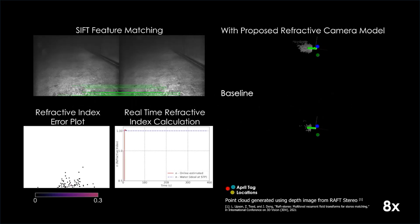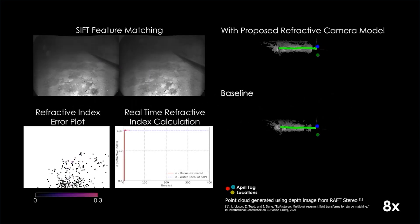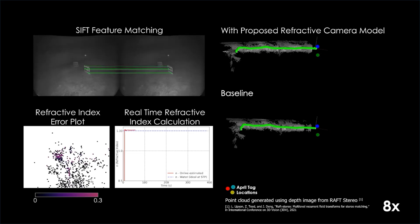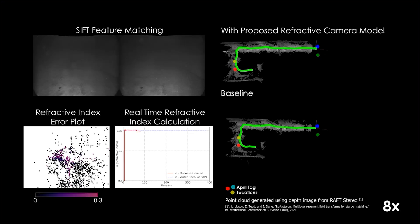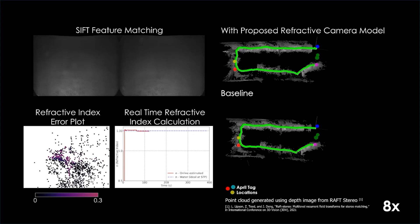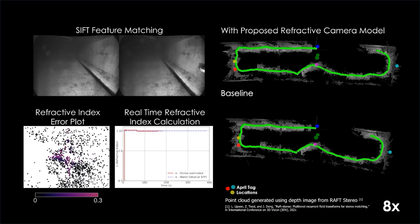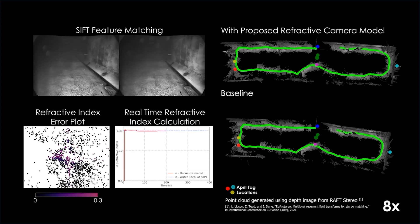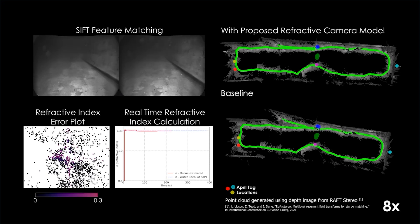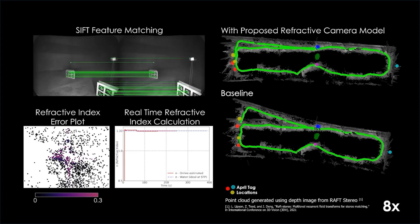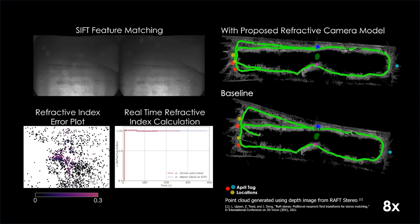We showcase one representative trajectory out of the 24 used for evaluation. The estimation is compared with the ideal value of refractive index 1.33 for water at STP. The method also provides enhanced odometry results. To obtain partial ground truth, we use AprilTags and the collective average distance of each tag upon redetection in subsequent loops is used as a quantitative measure. Note that the SIFT features used for refractive index estimation are independent of the patch features used by ROVIO in its visual front end.